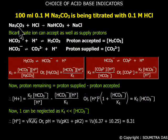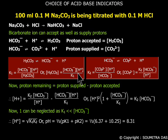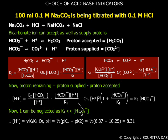At point C, the first equivalence point, there are no carbonate ions left — only bicarbonate ions remain. Bicarbonate ions can both accept and supply protons. Protons accepted are equal to the H₂CO₃ concentration and protons supplied are equal to the concentration of carbonate ions. Therefore, protons remaining equals protons supplied minus protons accepted, which is equal to the square root of K₁ times K₂, corresponding to a pH equal to 8.31.